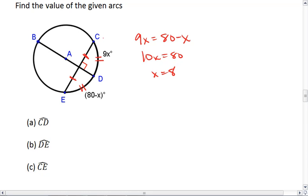Since X equals 8, CD is 9 times 8, which is 72 degrees. And since the arcs are congruent, then ED is also 72 degrees.